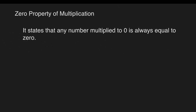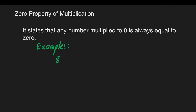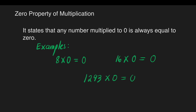Next is the zero property of multiplication. It states that any number multiplied by 0 is always equal to 0. Examples: 8 times 0 is equal to 0. 16 times 0 is equal to 0. 1293 times 0 is equal to 0. It means any number multiplied by 0 is equal to 0.